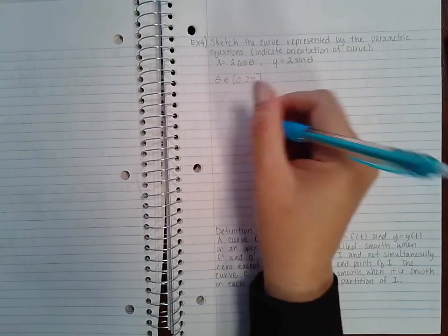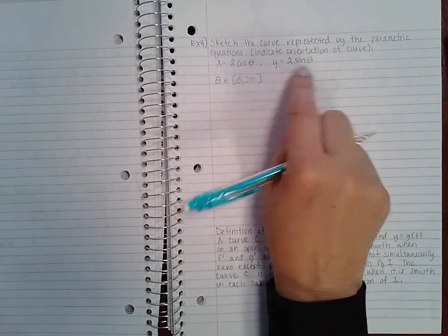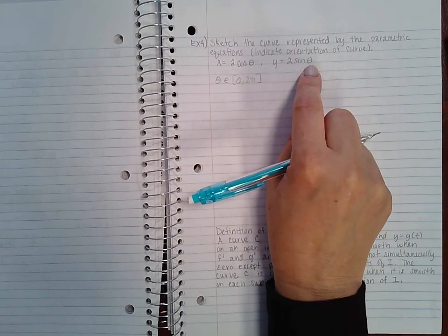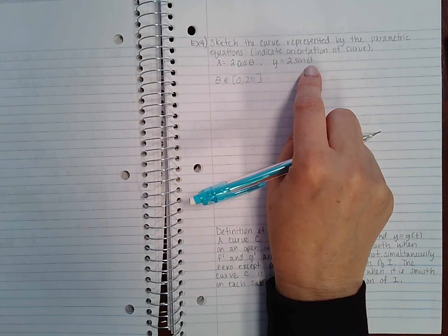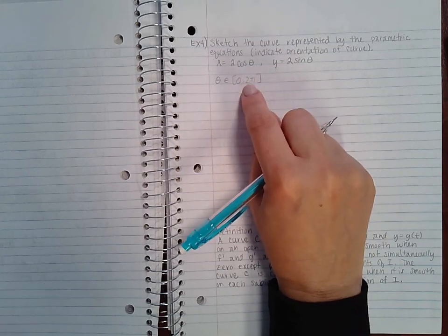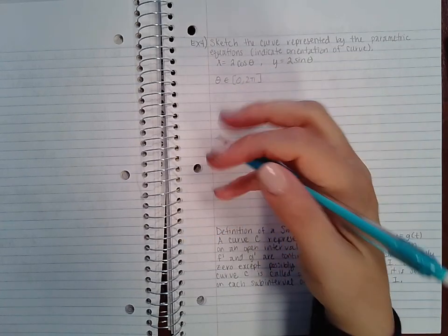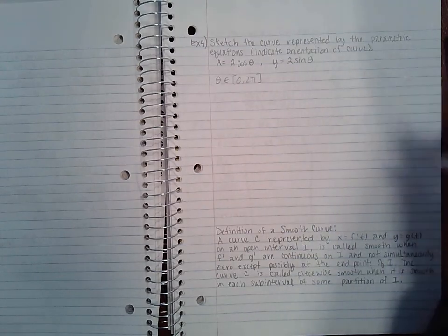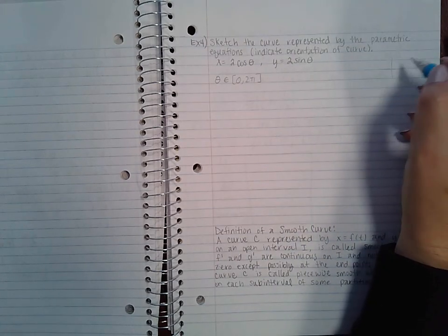Now since it's just theta, what I always like to do is divide this interval by five typically, because there's five critical points on a sine and a cosine curve.